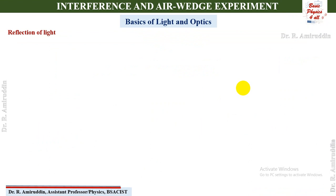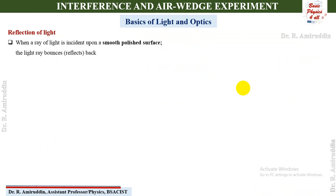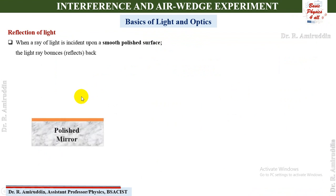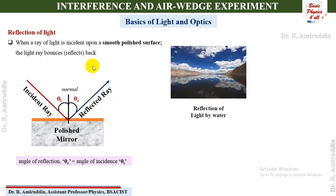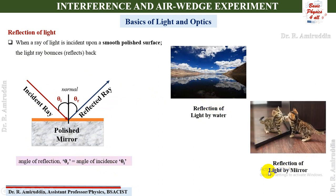The first phenomenon is reflection of light, which shows that when a light ray is incident upon a smooth and well-polished surface, the light bounces back. When the light ray falls upon a polished mirror at an angle theta i, it reflects back at an angle theta r. The angle of reflection theta r is equal to the angle of incidence theta i. We can observe this in daily life — picture one shows reflection by water and picture two shows reflection by a mirror.